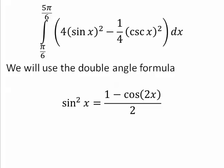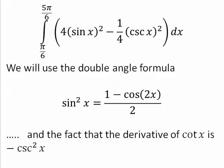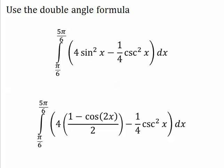But we're going to use that. And also, remembering that the derivative of cotangent x is negative cosecant squared x. So if you know your derivatives, sometimes your antiderivatives become very easy. So we use the double angle formula.